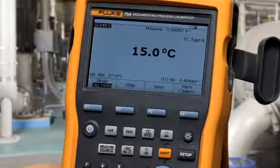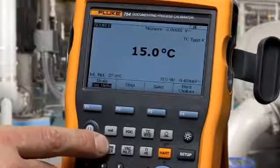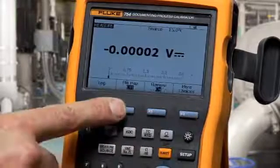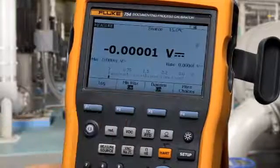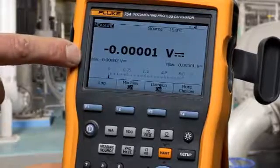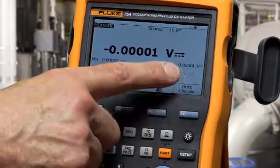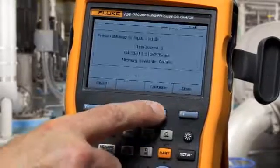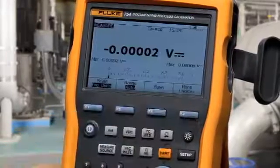To make min-max measurements, select the measure screen, press more choices two times, and then select min-max. The calibrator will capture the minimum measured value, the maximum measured value, and if you want to save to memory, press more choices and save, and then that information is stored in memory.